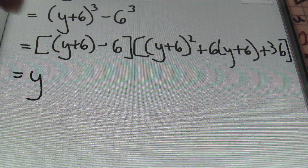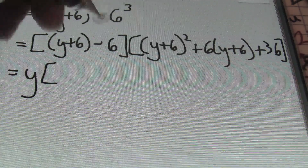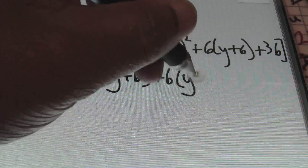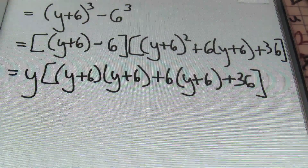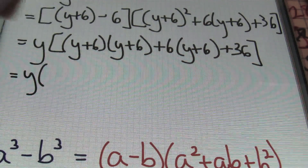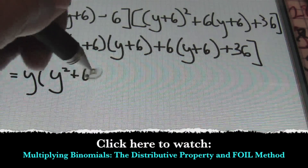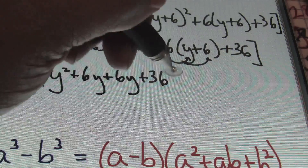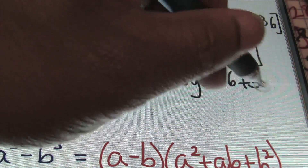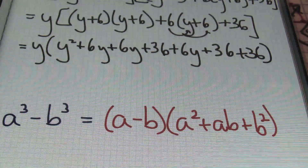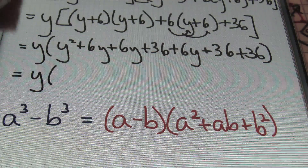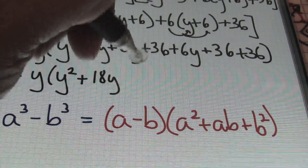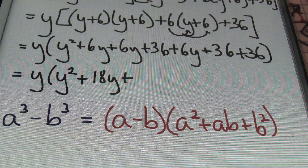Notice that 6 minus 6 is just 0, so we'll just be left with y. Then within the second set of brackets, I'm going to expand that binomial squared: y plus 6 times y plus 6, plus 6 times y plus 6, plus 36. Multiplying the binomials out — distributing — you'll have y squared plus 6y plus 36, then distribute the 6 to get 6y plus 36, plus 36. Combining like terms: y squared plus 18y — from the three 6y terms — plus 108 — from 36 plus 36 plus 36.